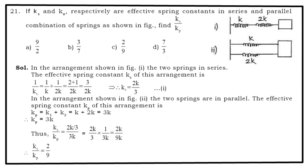In parallel arrangement, Kp = K1 + K2, so that becomes 3K. So Kp = 3K. Now take a ratio: Ks/Kp. So when you take that ratio, that is 2/9. So option C is the correct answer.